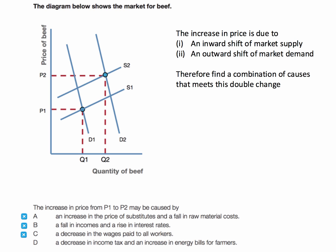C is wrong. A decrease in the wages paid to all workers would increase supply in the market due to lower wage costs in farming, but would also reduce disposable incomes and therefore people wouldn't be able to buy as much beef — the demand curve would shift to the left.